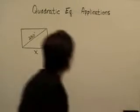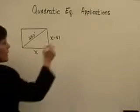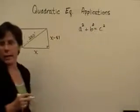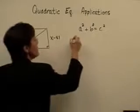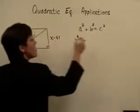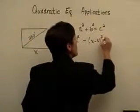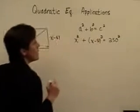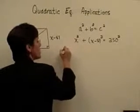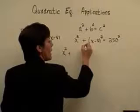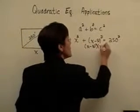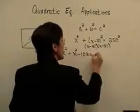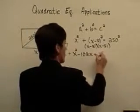Given that we have a right triangle here, let's use the Pythagorean theorem: a leg squared plus another leg squared equals the hypotenuse squared. I'm going to take x squared plus the binomial x minus 51 squared and let it equal the hypotenuse squared, which is 250 squared. Think of this as x minus 51 times x minus 51. That gives you x squared minus 102x plus 2,601.